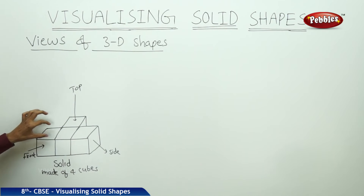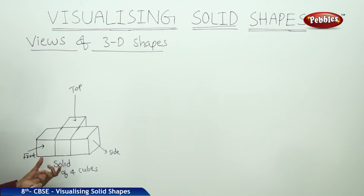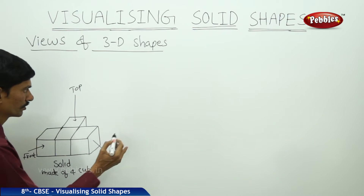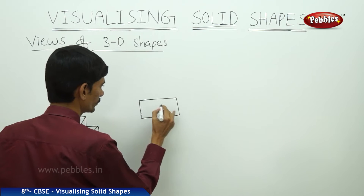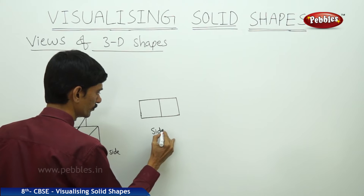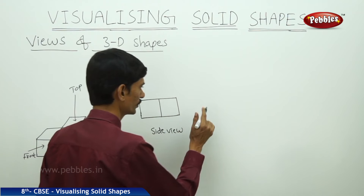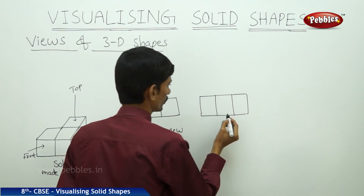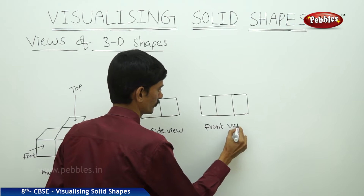Now let us take a combination of four cubes. This is a solid shape formed by four cubes. From the side, we can observe two cubes, so we draw two squares to represent the side view. From the front, we can observe three cubes, so we draw three squares to represent the front view.